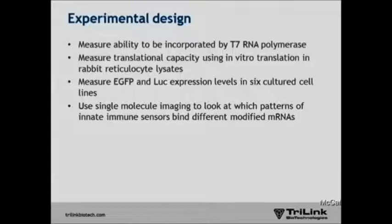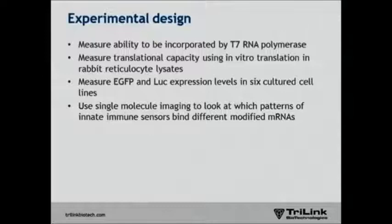The first thing we did was look at whether or not they could be incorporated by T7 polymerase, because you can't easily make an mRNA without that. We measured their translational capacity in an in vitro translation system — rabbit reticulocyte lysates. Then we looked at expression of EGFP and luciferase in six cultured cell lines. We're also moving into a collaboration with Phil Santangelo's lab at Georgia Tech to look at single molecule imaging to examine which innate immune sensors bind different modified RNAs.